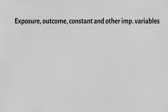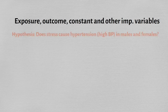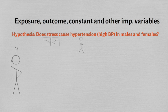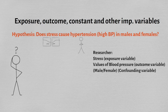Exposure, outcome, and other important variables can be abstract in research, so it's always better to have practical examples. If the question is whether stress causes hypertension or high blood pressure in males and females, then from a research point of view, stress is the exposure variable and blood pressure reading is the outcome variable.